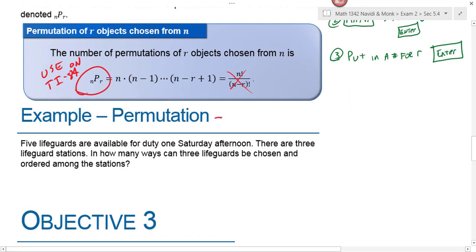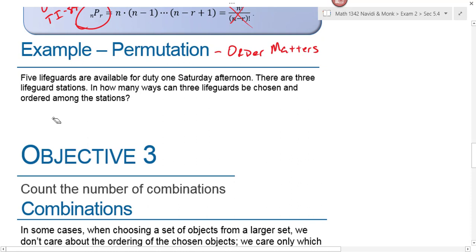Remember, we use permutation when order matters. It makes a difference when you're running a race if you come in first, second, or third. In this problem, we're told five lifeguards are available for duty one Saturday afternoon. There are three lifeguard stations. In how many ways can the three lifeguards be chosen and ordered among the stations? First of all, let's say the three stations—we had the kiddie pool, the diving board, and then the regular pool. Would it make a difference to you if you worked at the kiddie pool or the diving board or the regular pool? If you were a lifeguard, it would matter to you. You probably don't want to watch the kiddie pool, or I don't know, maybe you do if you want to take it easy.